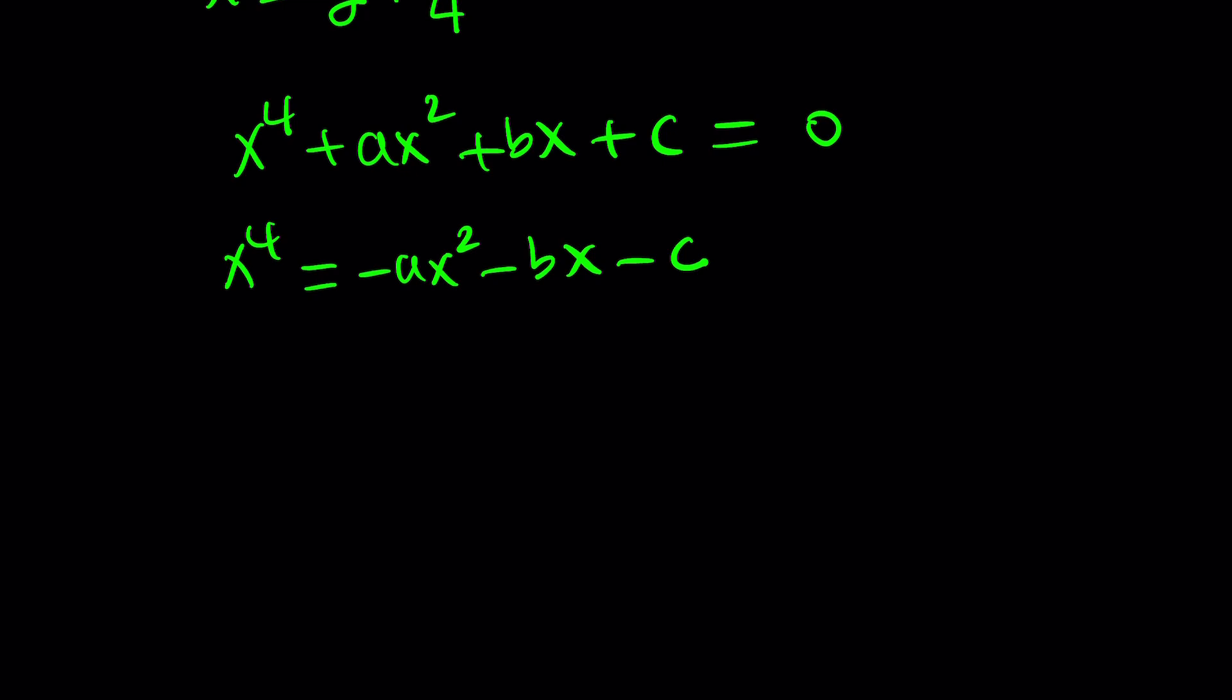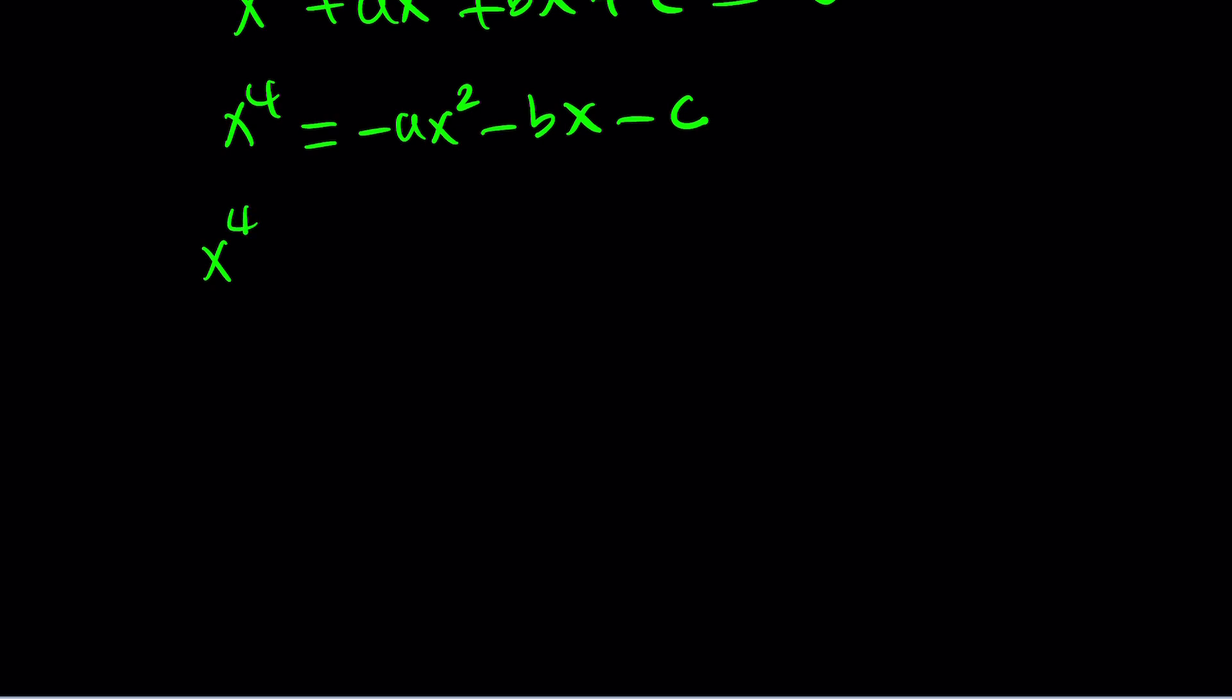But what would you add? That's the million-dollar question. You should add to both sides something like this: x to the fourth will be added to 2kx squared plus k squared. You might be asking, why? Because we have a fourth power, and I want to add a square, and we'll make it a perfect square. Why do I add a square? Why don't I add a fourth power? I could have. But if you look at the right-hand side, it's quadratic. If you add another quadratic, it'll still be quadratic. So we can make it a perfect square. Am I making sense? Hopefully.